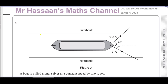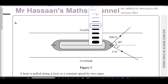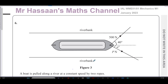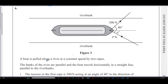This is Mr Hassan's Maths Channel, and I'm answering question number six from the January 2023 International A-Level Edexcel Mechanics M1 paper. This question is about a boat being pulled along a river at a constant speed by two ropes. The banks are parallel and the boat travels in a straight line parallel to the riverbank. We're looking at a plan view — like drone footage from directly above — so the weight acts straight into the page and we don't need to consider it.